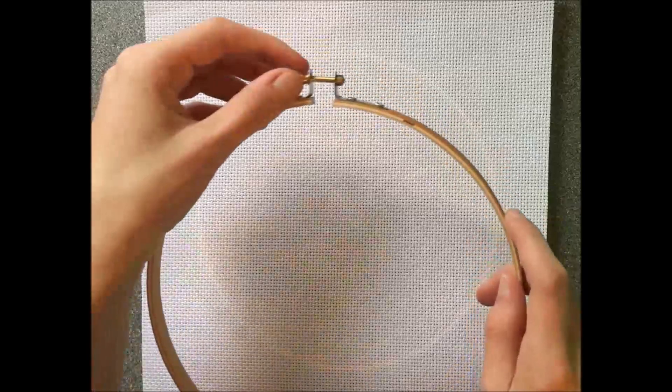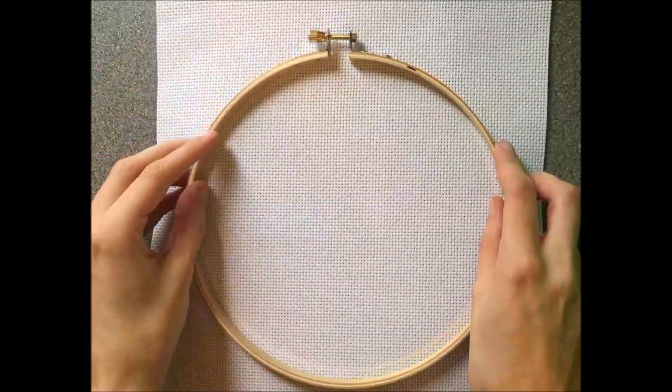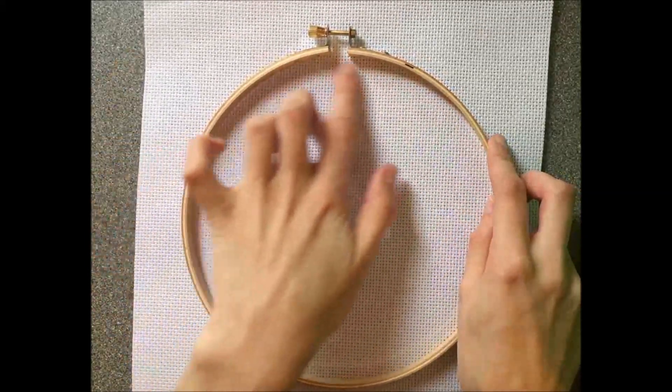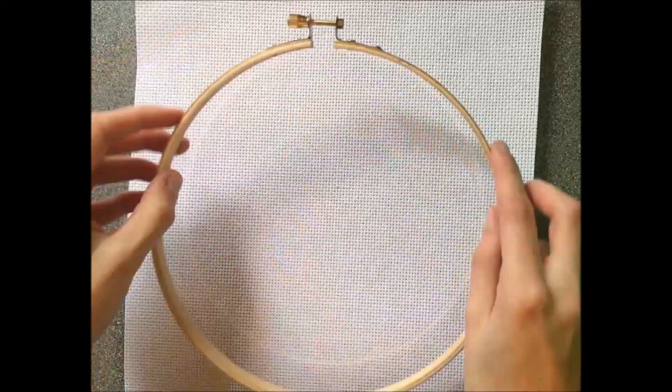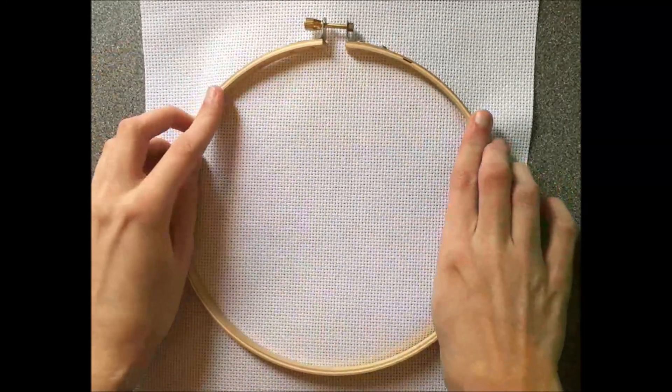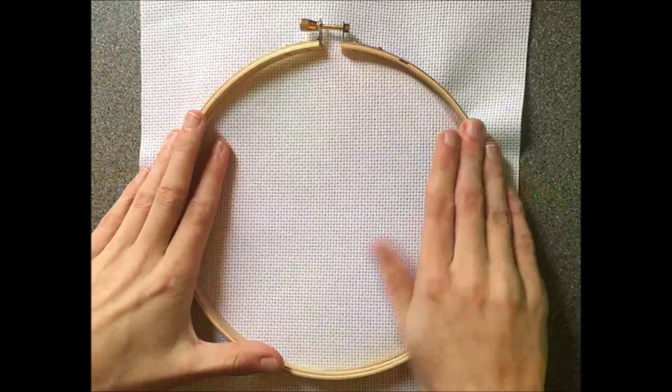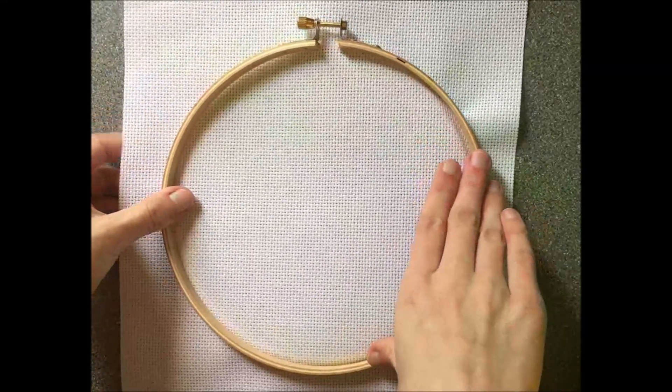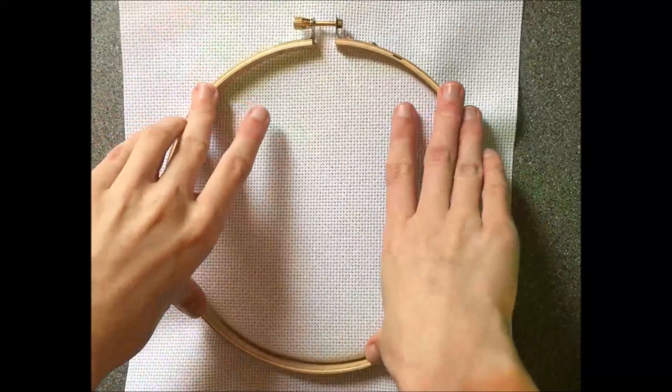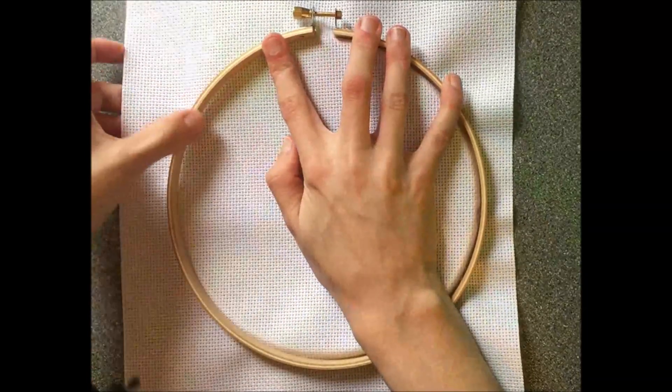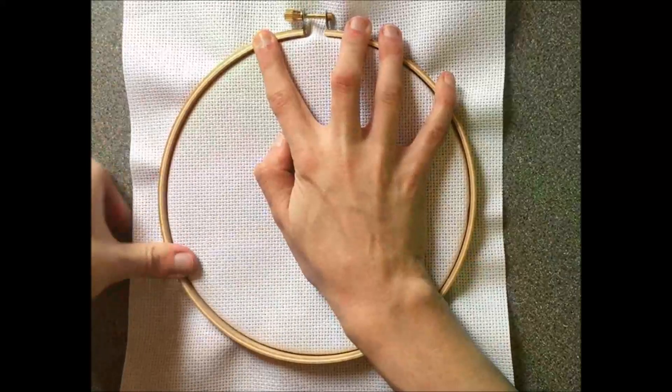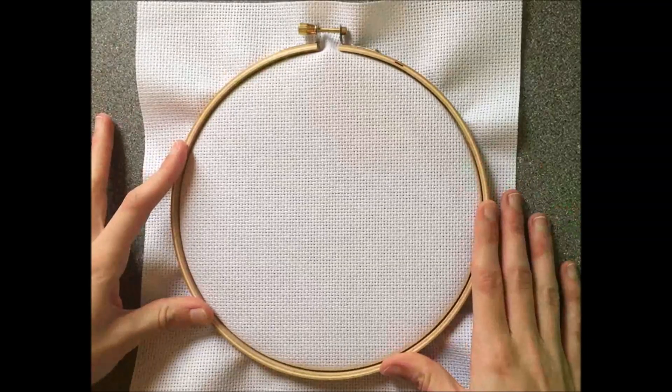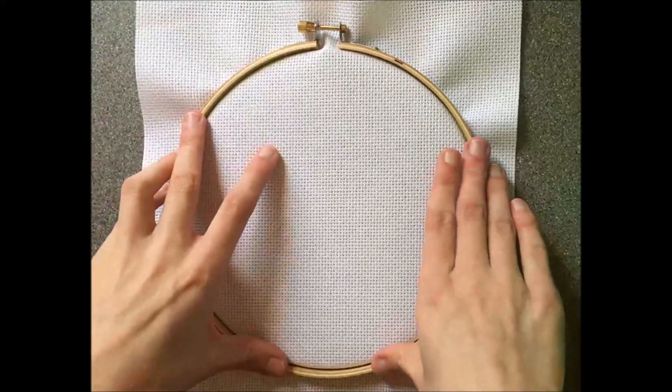So now what you want to do is lay the outer hoop on top of the cloth, kind of feeling where the inner hoop is underneath it. Loosen it up and now you're going to press down like that until it is over the inner hoop.